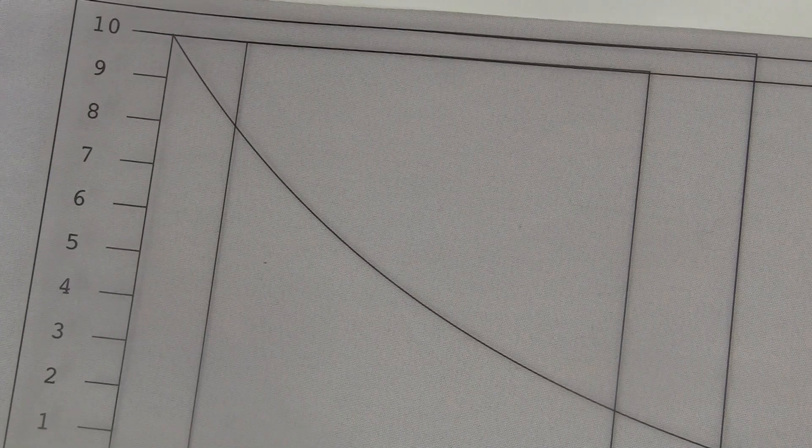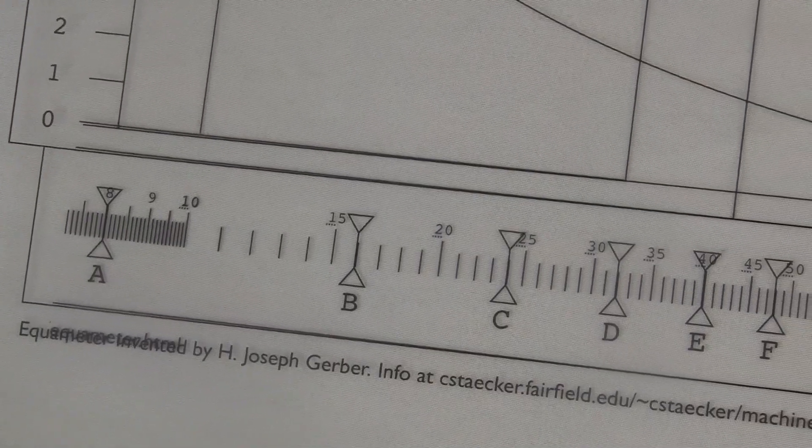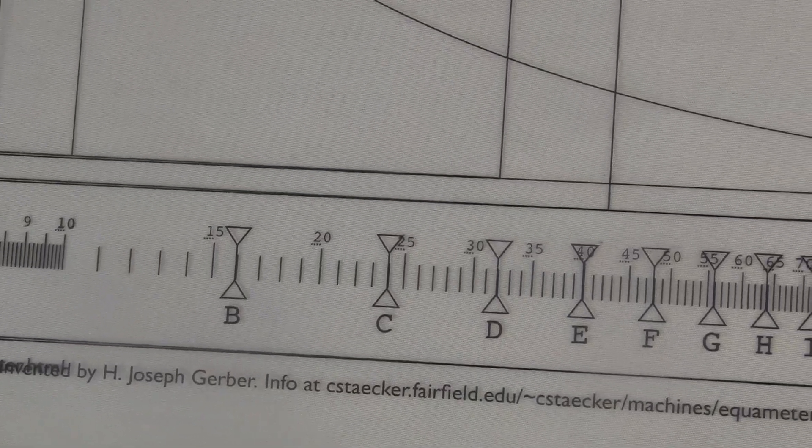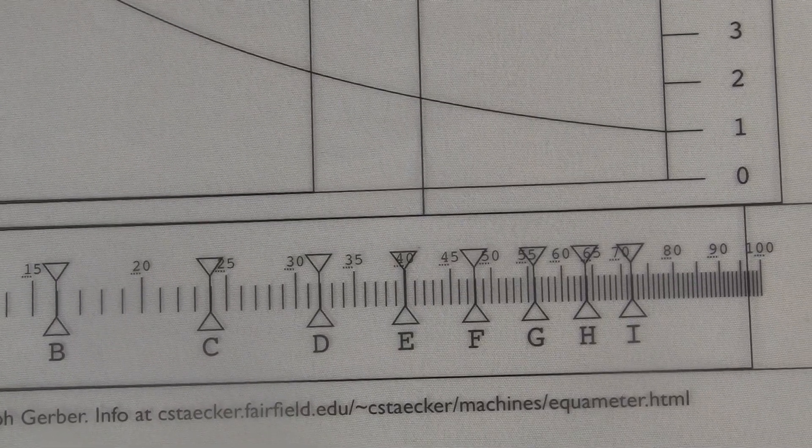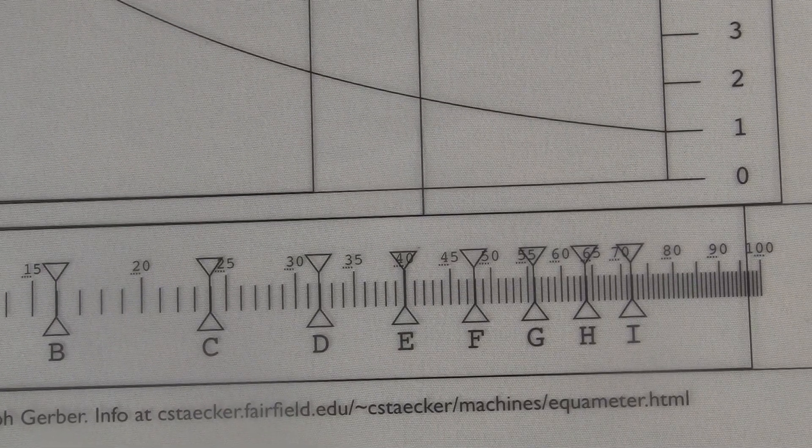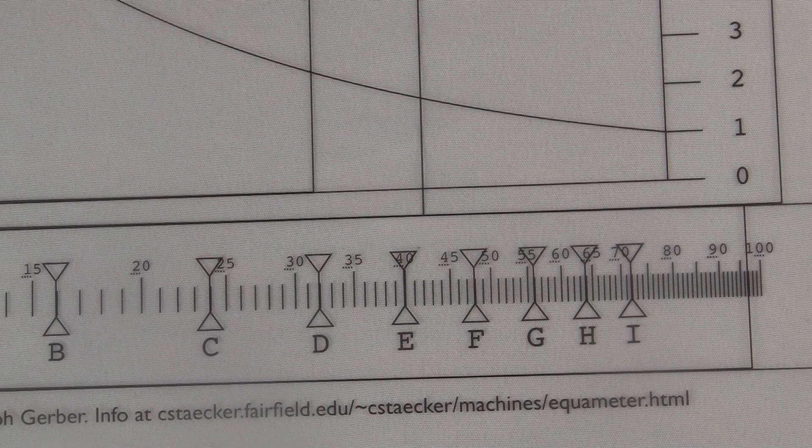See, when the A indicator is at eight, the B is at 16, which is two times eight. The C is at 24, which is three times eight. The D is at 32, which is four times eight, right? So when you line the equimeter up, what you're getting is a snapshot of all possible digits times the Y value on the curve.